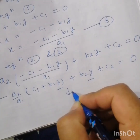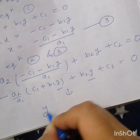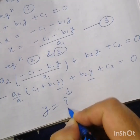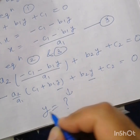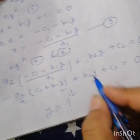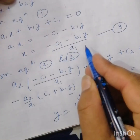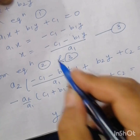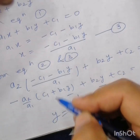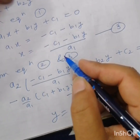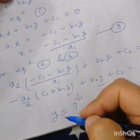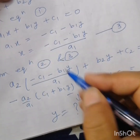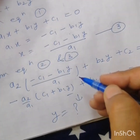This equation is in terms of only y, so by solving it we will get the value of y. After finding the value of y, we put it in equation three to get the value of x. By this way we can calculate both x and y.